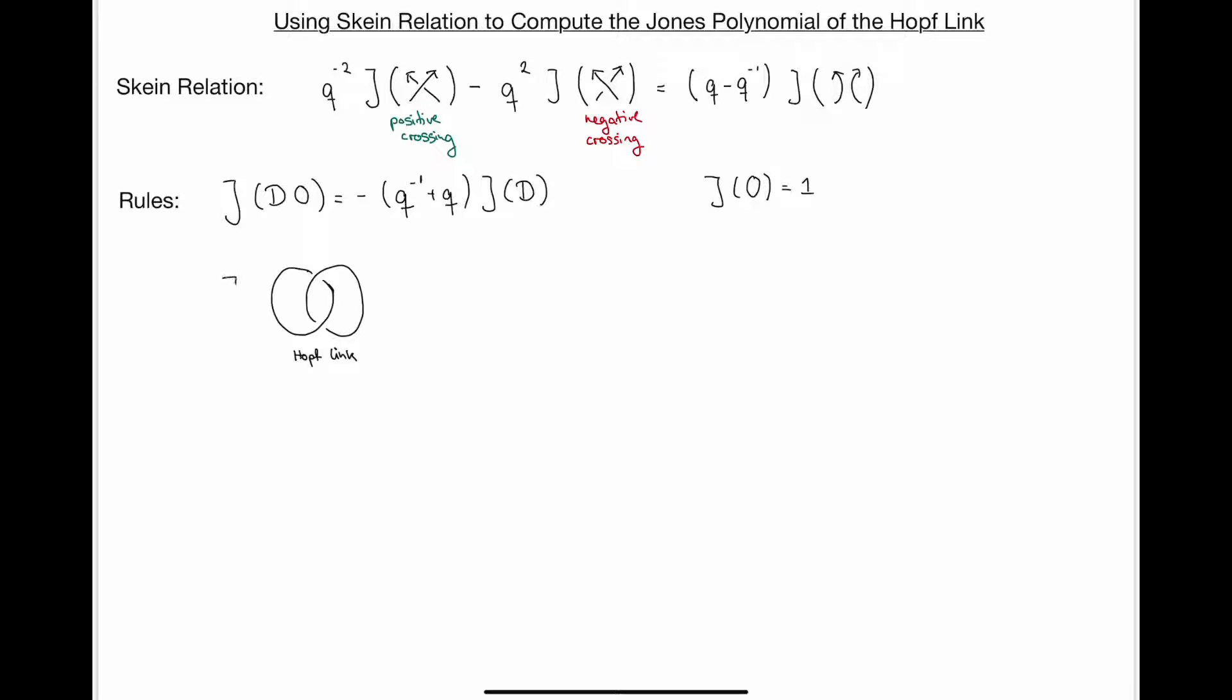So here, I'm interested in the Jones polynomial of the Hopf link. And in order to do that, we have to choose orientation. So we're going to make this top crossing here a positive crossing. We're going to make it both point upwards.